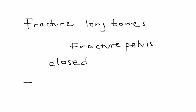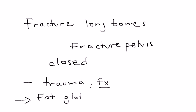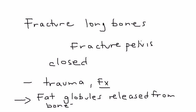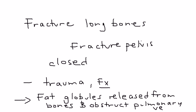A typical scenario is that a person has some sort of trauma, maybe a motor vehicle accident, develops a fracture, and then develops a fat embolism. A fat embolism is basically these fat globules that are released from the bone during the time of a fracture. These fat globules can travel to the lung and then eventually obstruct the pulmonary vessels.